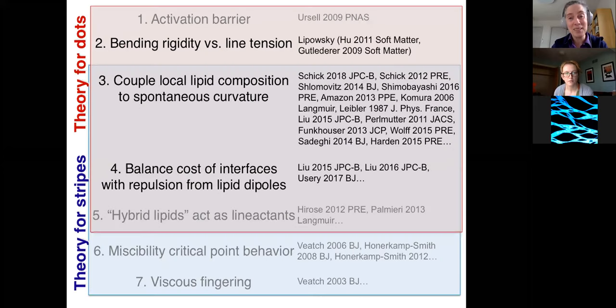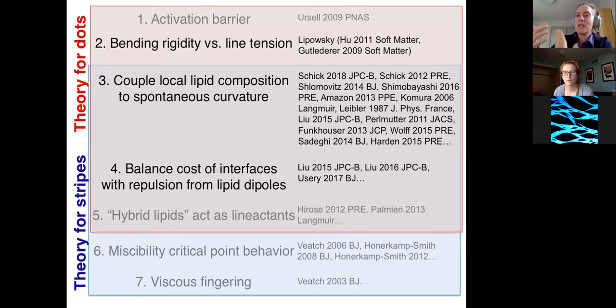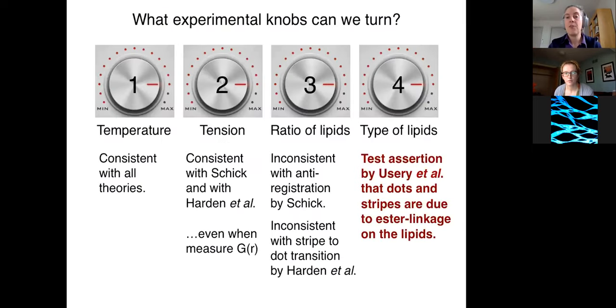All right, so to conclude, what do we find so far? Temperature says it's consistent with all theories. Tension says it's consistent with all theories. The ratio of lipids says it's inconsistent with all theories that discuss it. So now let's think about the types of lipids. The types of lipids relate to this number four, balancing the cost of an interface with repulsion from lipid dipoles. And here I get confused when I think about lipid dipoles in terms of a bilayer scenario. So you should really more think of a quadrupole in that case. And now there's a question of that quadrupole is now surrounded by water. When you think of its dielectric constant, it's hard to imagine how you get enough of an effect.